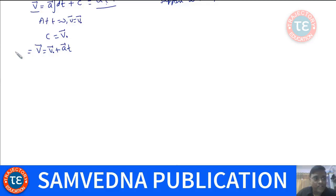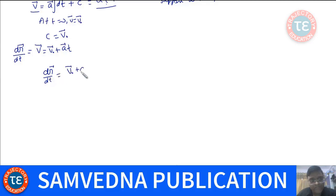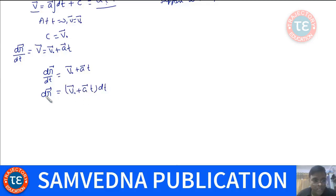Since V = dr/dt, we have dr/dt = V₀ + At. Integrating both sides again, we get the position vector R. Using the formula for integration — the integral of tⁿ dt = t^(n+1)/(n+1) plus a constant, where n ≠ −1 — since we have t dt, that gives t²/2.